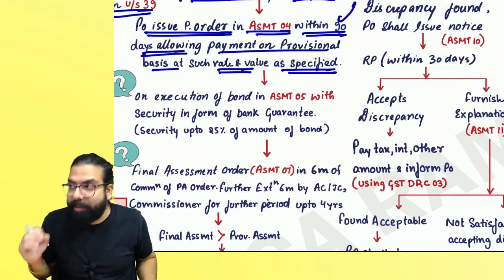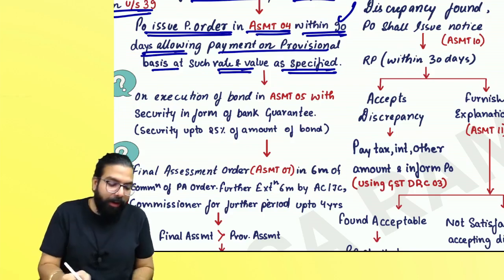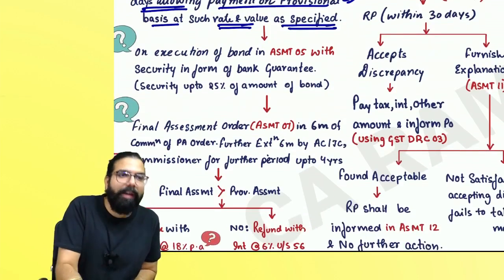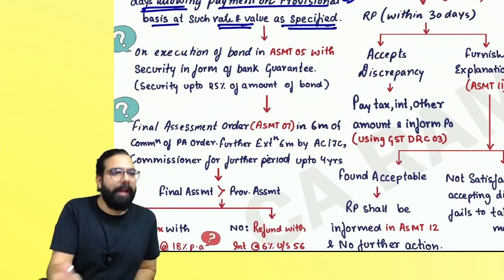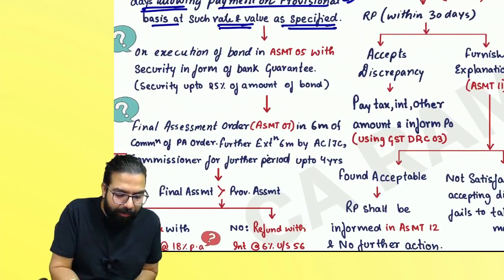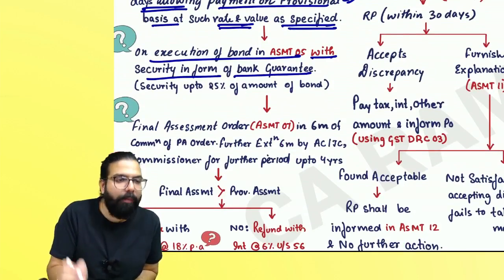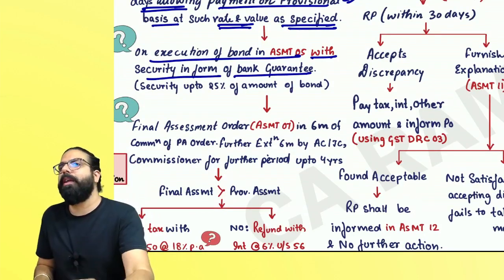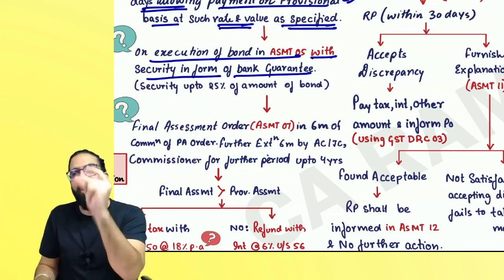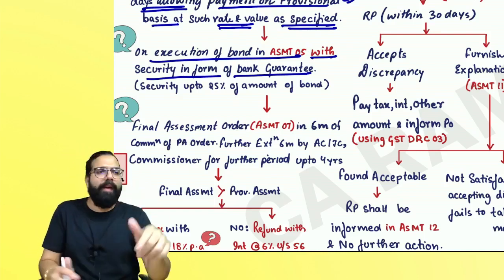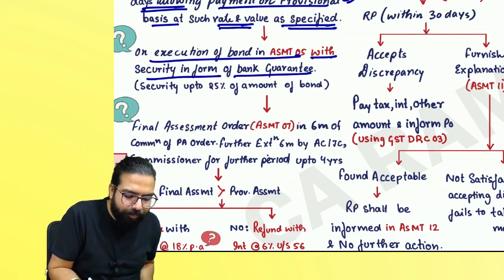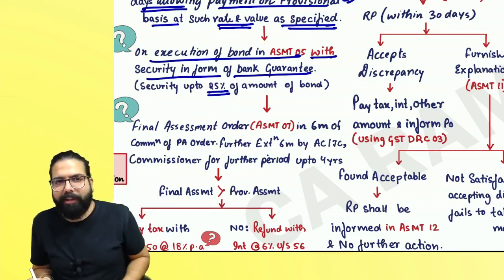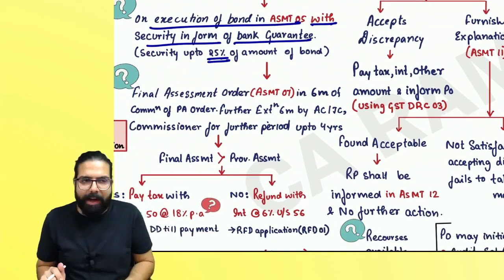Once he has issued the provisional assessment order, he will also tell you to make a bond in ASMT-05 along with security in the form of a bank guarantee. If you give a bond of one lakh rupees, then 25% of the bond — that is the bank guarantee — should be the security.